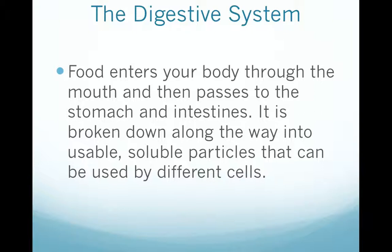Now that the food is chewed up, it goes down what's called our esophagus — a long tube that leads down to our stomach. Once in the stomach, acids churn the food and create a paste. That paste leads to our intestine, where it's broken down into usable, soluble particles that can be used for the different cells. We take what we need from that food and use it in our cells, then we evacuate the waste — all the extra materials we don't need.